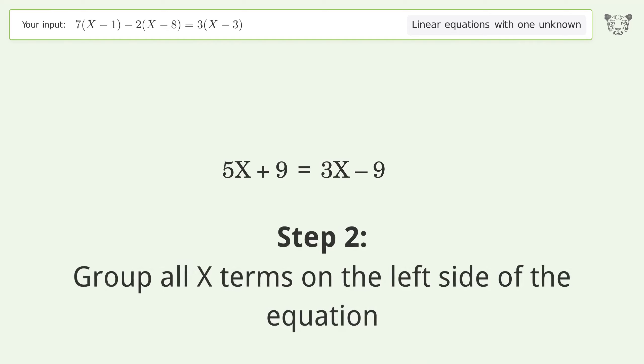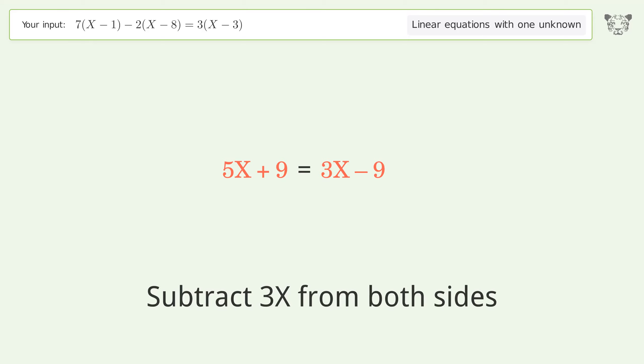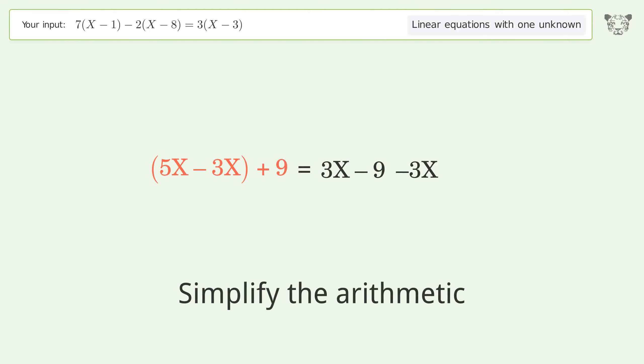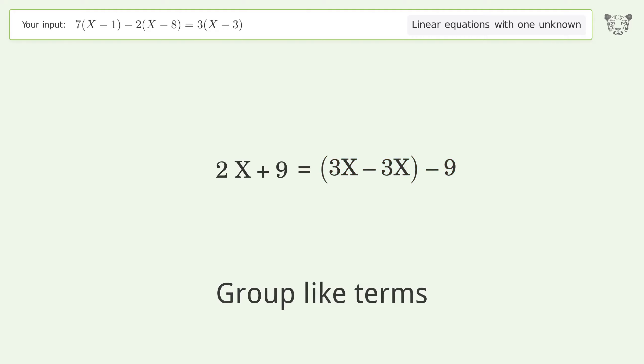Group all x terms on the left side of the equation. Subtract 3X from both sides. Group like terms, simplify the arithmetic, group like terms, and simplify the arithmetic.